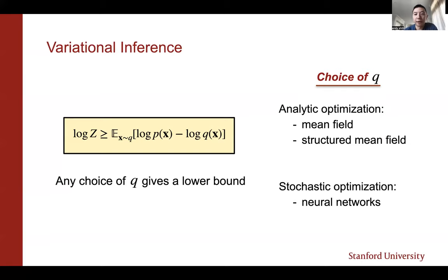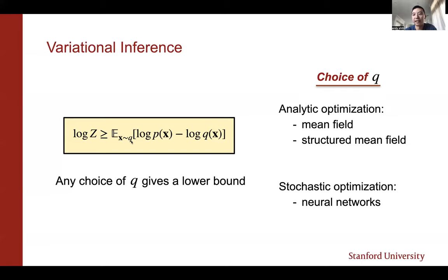Or you can go more expressive and model q with a neural network. The problem is that if you model q with a neural network, it's hard to evaluate this expectation — you have to take samples, and as we'll see, these samples run into problems when the setting is discrete.